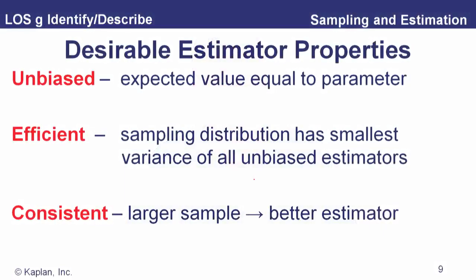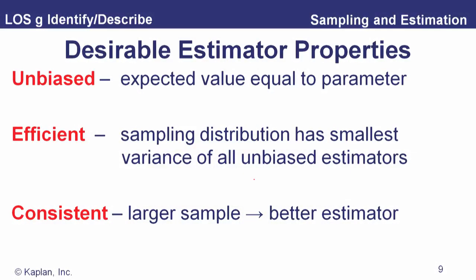An estimator should also be efficient, meaning the sampling distribution has the smallest variance of all unbiased estimators — if we have multiple unbiased estimators, we want to choose the one with the smallest variance, and that's the efficient one. Consistency means that as the sample size gets larger, the estimator gets better — this is clearly true for the sample mean. Doubling the sample size gives a better estimate of the true mean, and this was the idea behind the standard error: as n gets larger, our observations cluster more closely around the true mean.